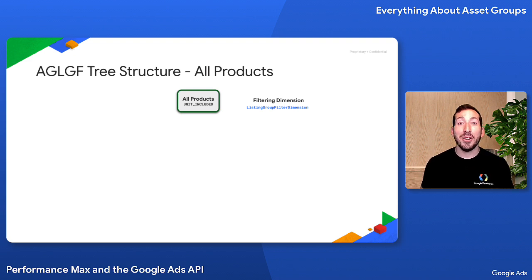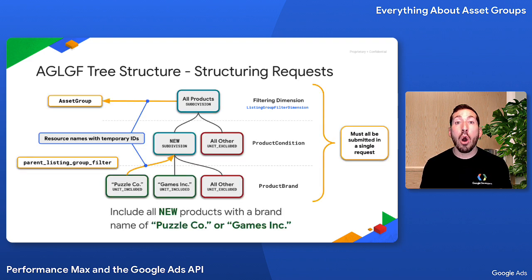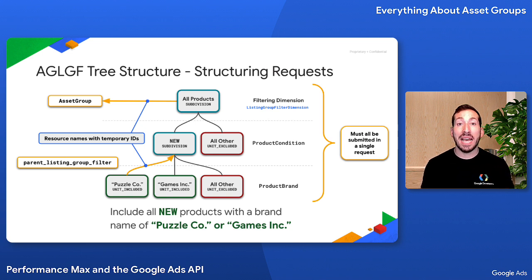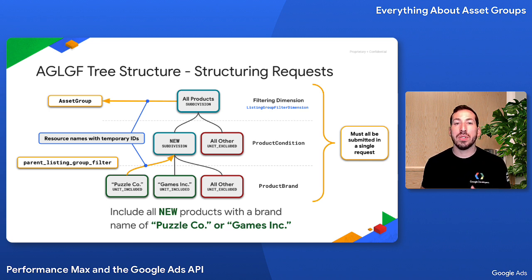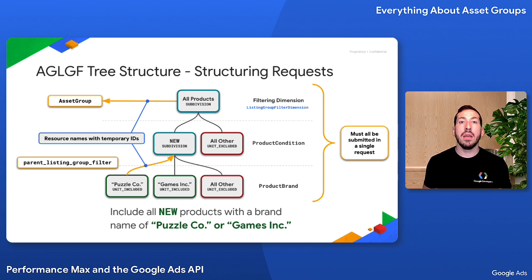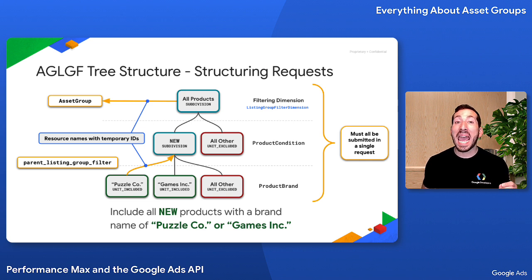As a reminder, the operations that create all of the Asset Group Listing Group filters in a tree and the one that creates the Asset Group must all be in the same request. This means you'll need to use temporary IDs and resource names and order the operations such that you never reference an object before it's created. This includes all of the Asset Group and Parent Listing Group filter references.